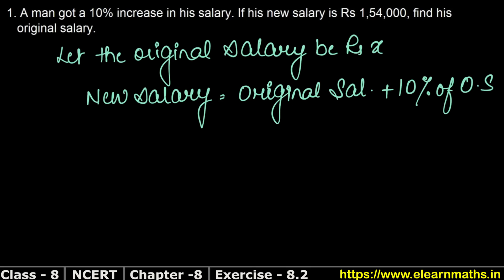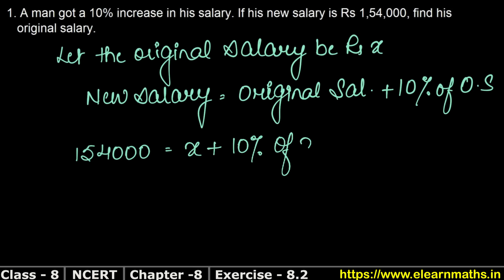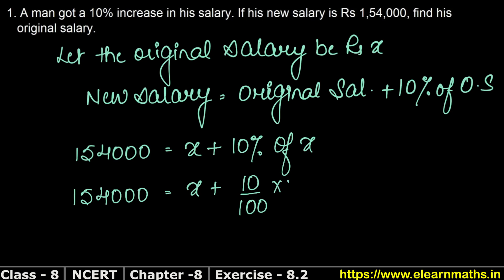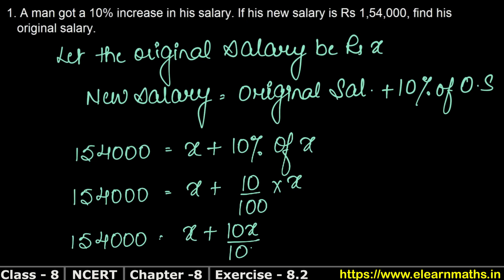Now substituting the known values: the new salary is 1,54,000 and the original salary is x. So we write: 1,54,000 equals x plus 10 percent of x, which gives us 1,54,000 equals x plus 10x upon 100.